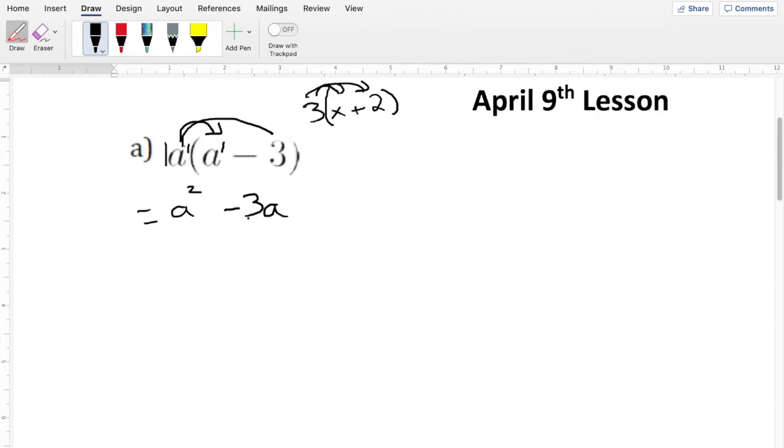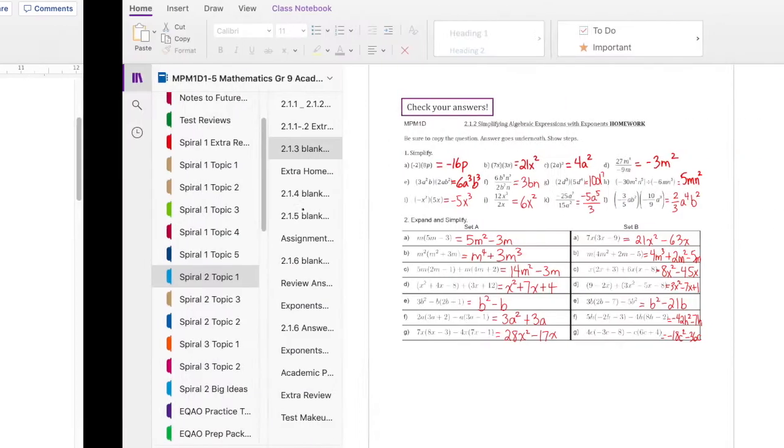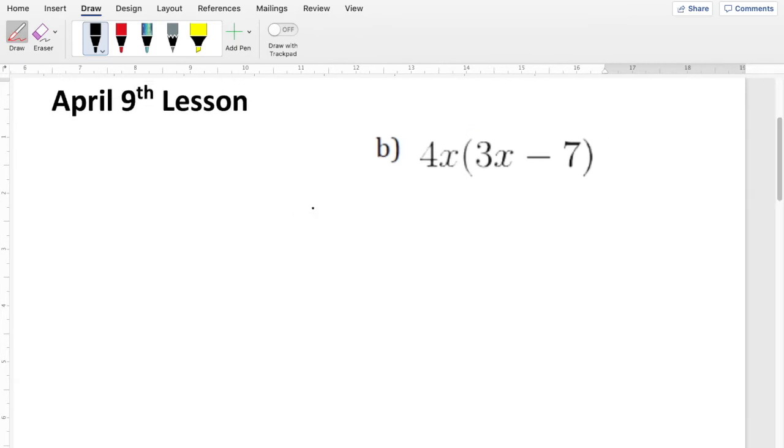And we can't combine any further because these aren't like terms. A squared is not the same as a, because they have the same variable, which they do, but they don't have the same exponent. Because that's a 1 right there.